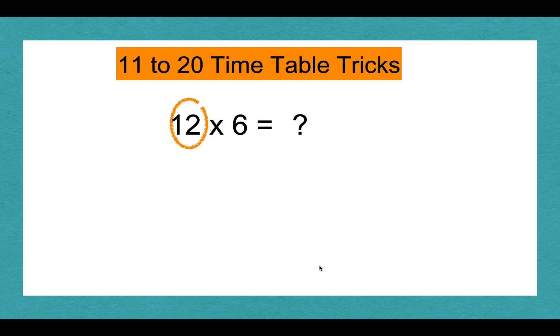Circle 12, split it again. 6 is the other number, so 10 times 6 and 2 times 6. 10 times 6 equals 60, and 2 times 6 equals 12. 60 plus 12 equals 72.